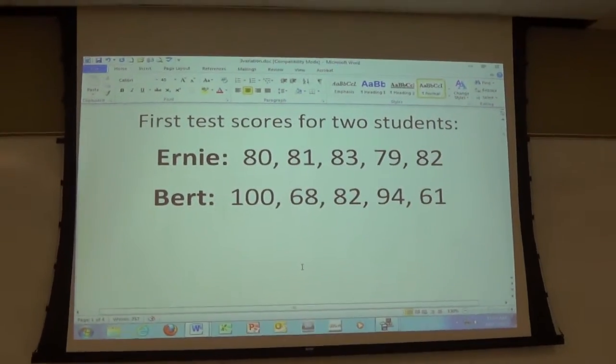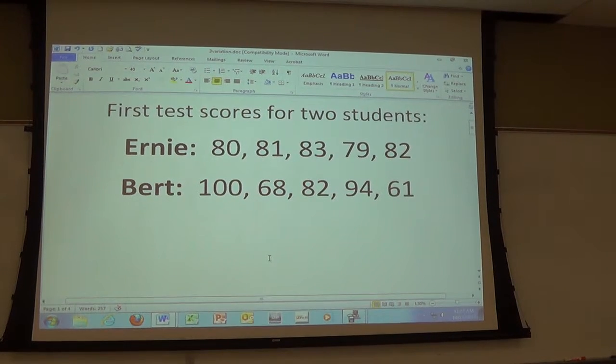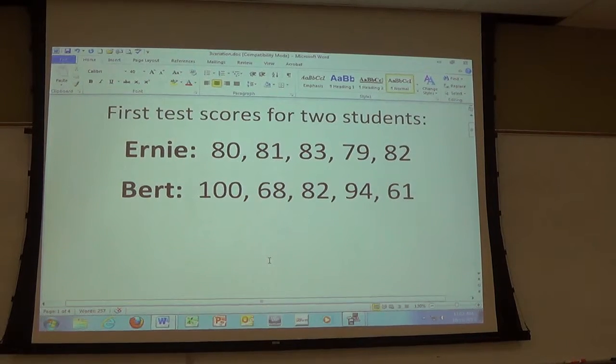So, you've got just five test scores. Your job is to define what better means and then quantitatively support which one of those is a better student based on that, all right.